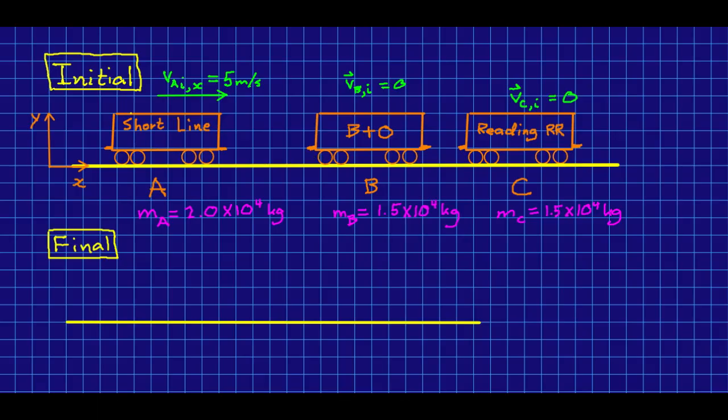Let's work a problem to see how to use some of these ideas. So here we have three train cars all on the same track. Let's say train cars B and C are both stationary, but train car A is moving along the track towards them, and I've given its speed. I've also given the inertias of the three train cars.